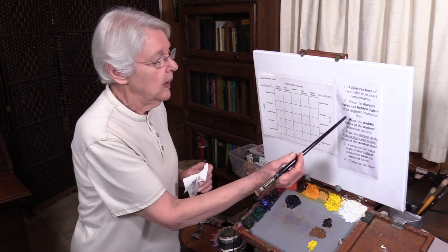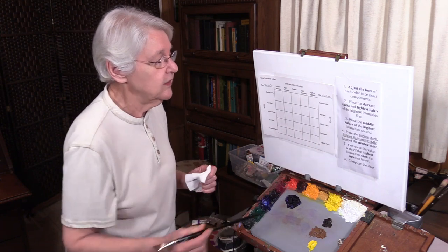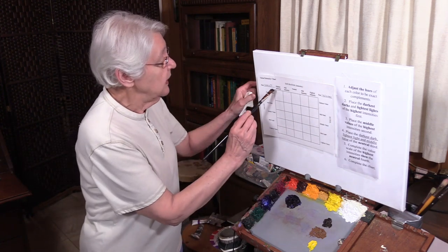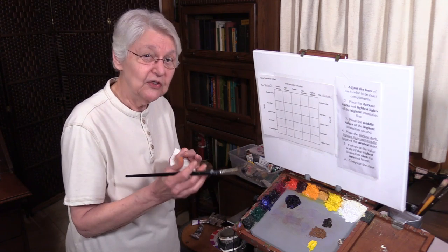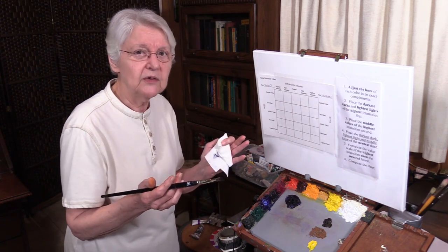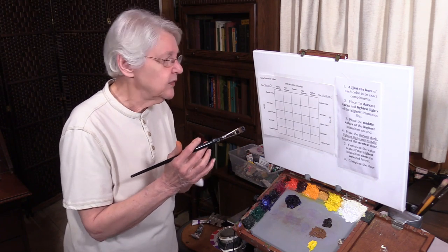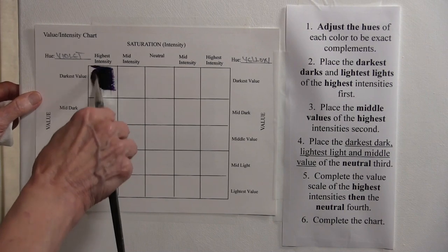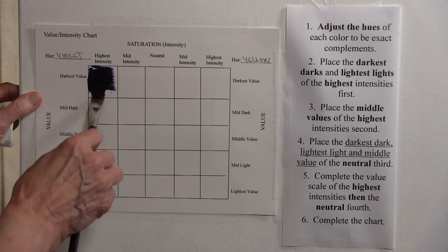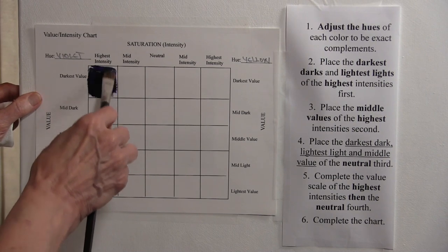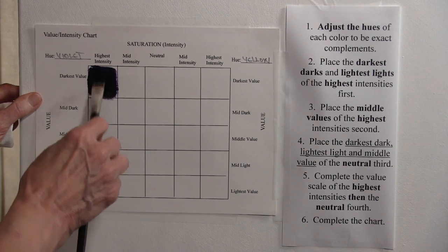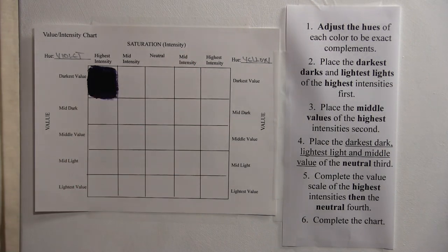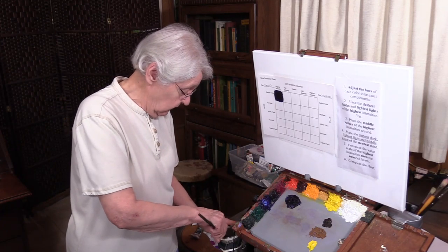Step two is: place the darkest darks and the lightest lights in the highest intensities. We're going to go to purple first. The highest intensity, even though it doesn't feel like a high intensity, is the darkest darks. No darkest dark has a real high intensity, but this darkest dark has more purple in it — let's say it has all the purple in it — because of the pigment it's made of. It has all the purple needed to neutralize the yellow. That's the darkest dark of the purple.